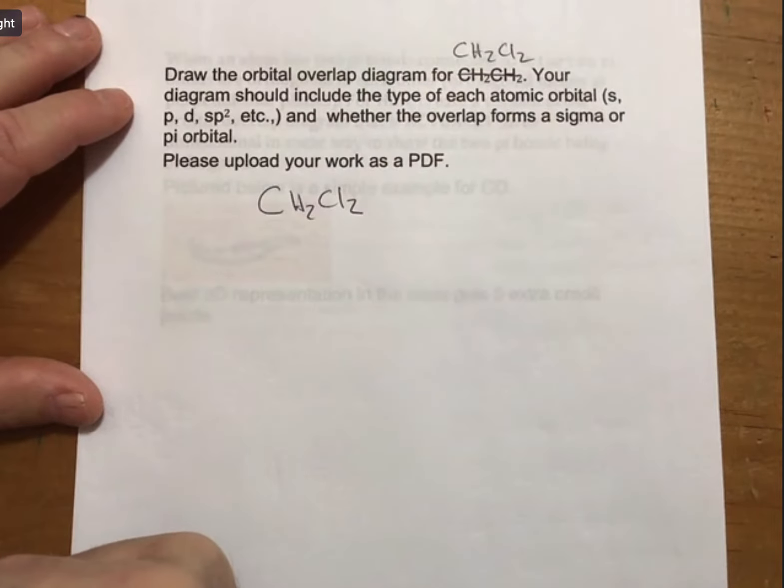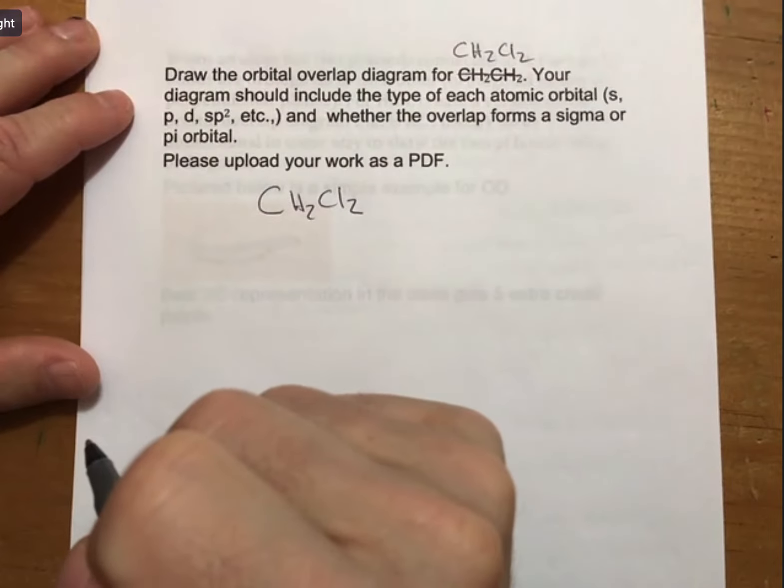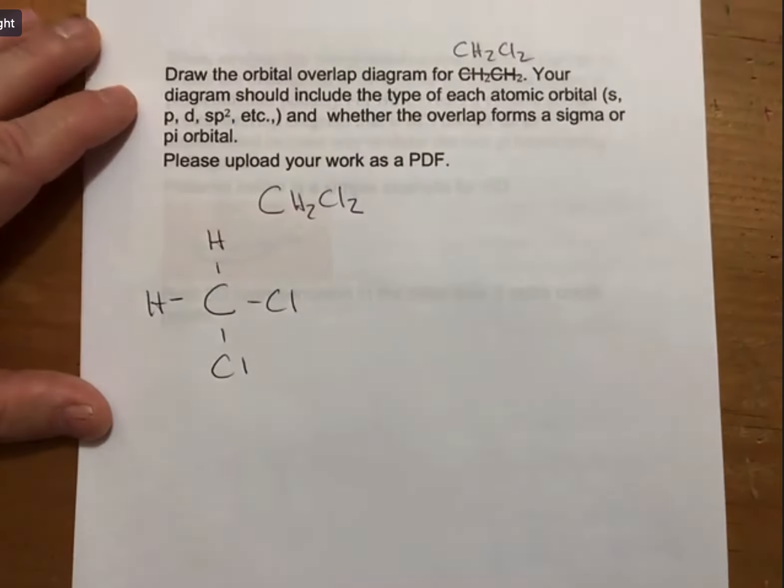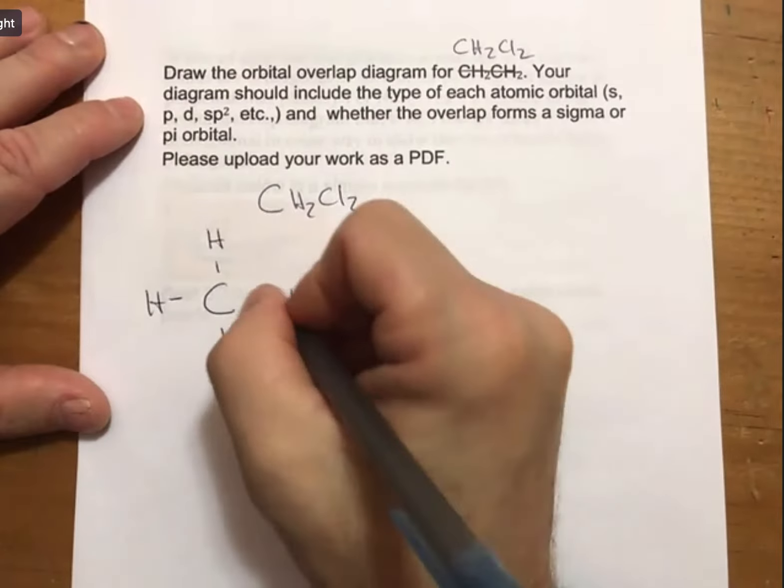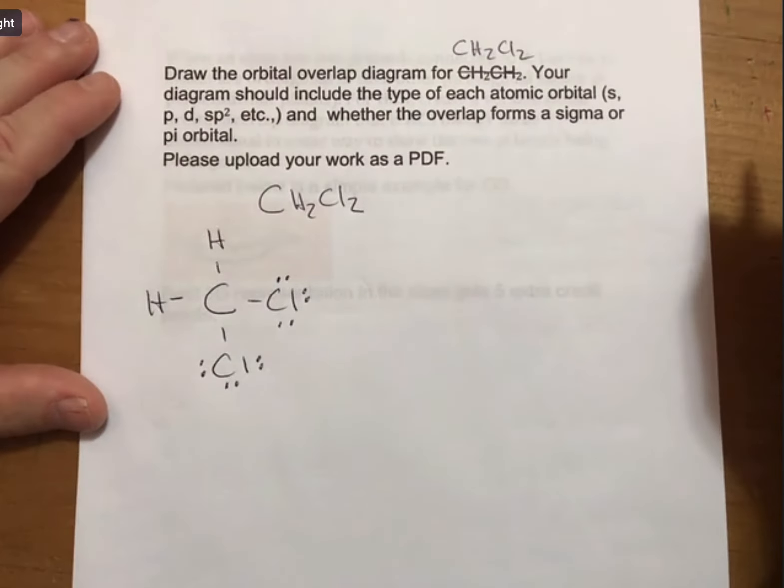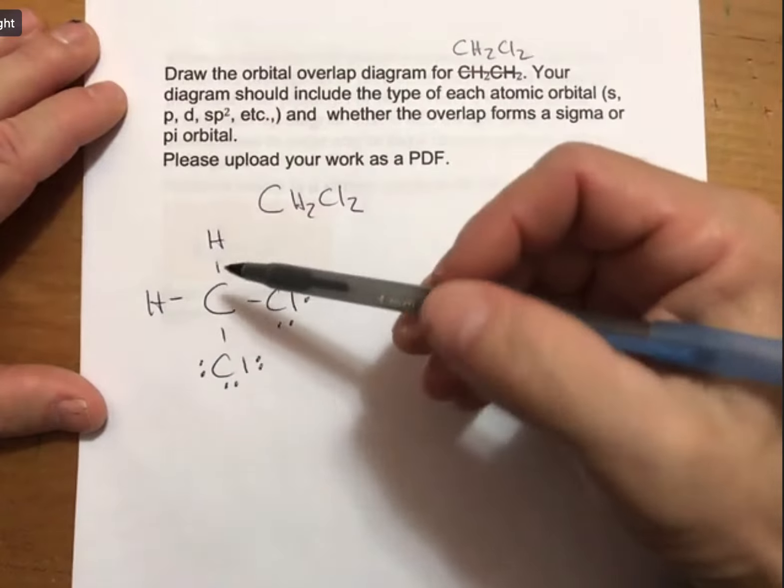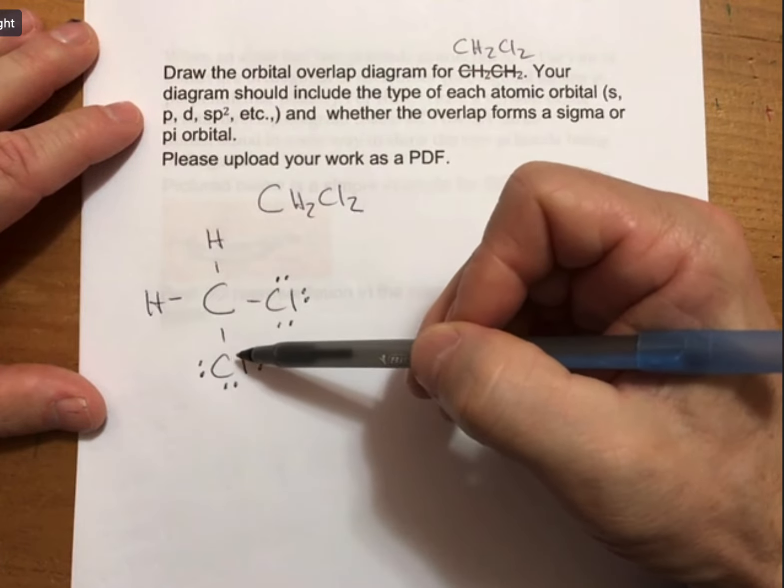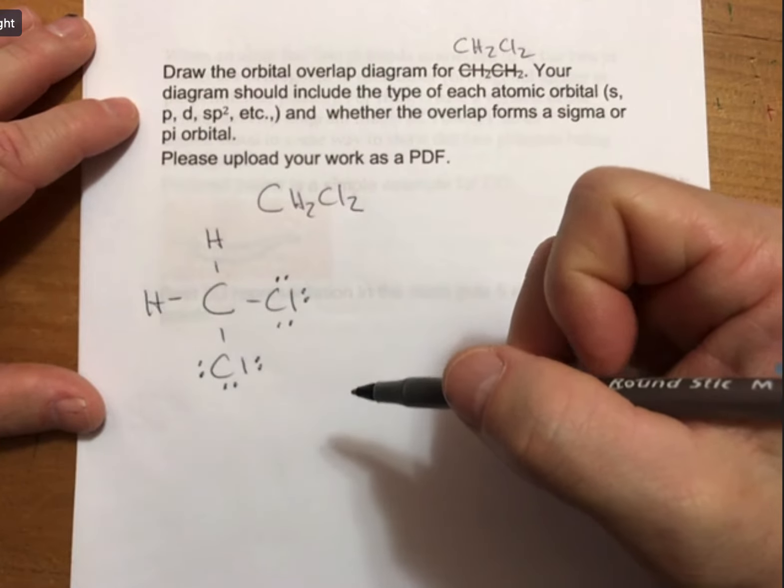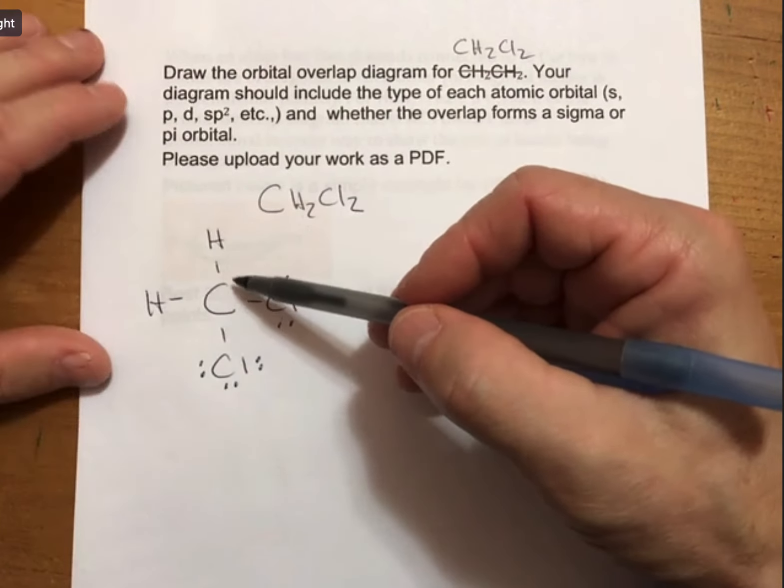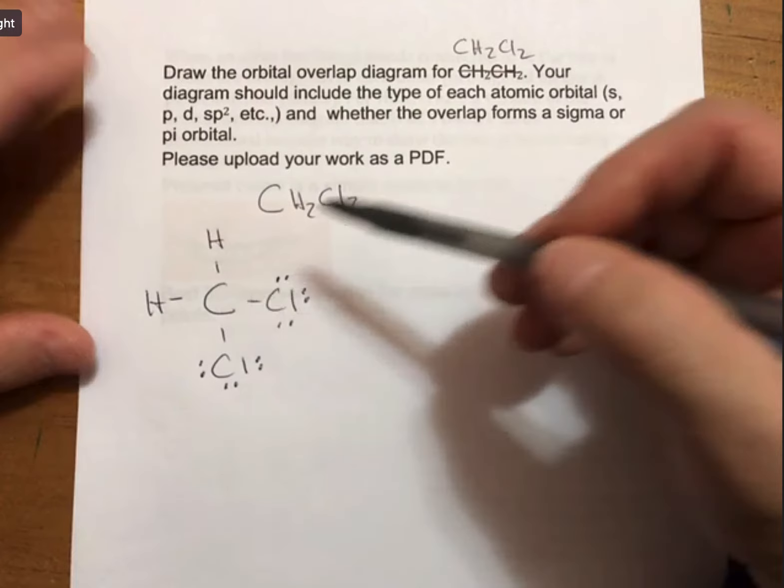Our process will always be to draw the best Lewis structure. I'm going to go quickly through that part now. This is going to be two H's and two chlorines bonded to the central carbon. For hydrogen, it's really called the duet rule because hydrogen only ever wants two electrons. Just be aware of that.